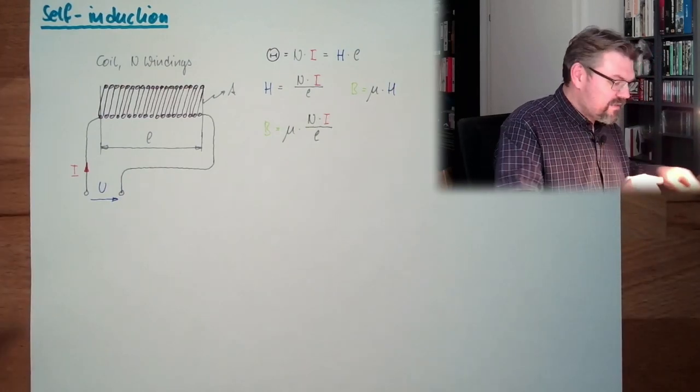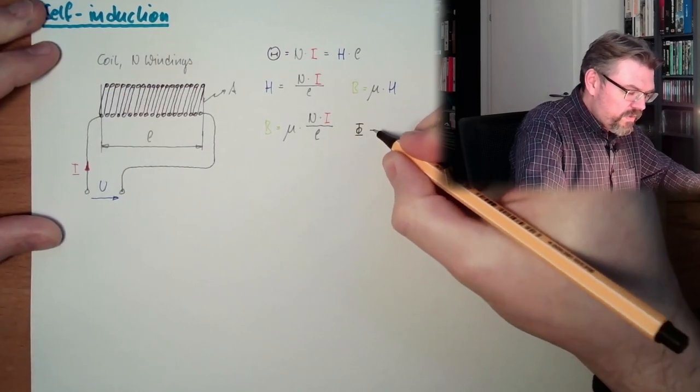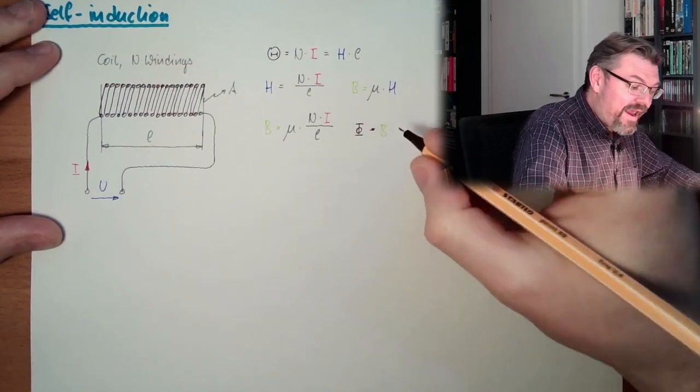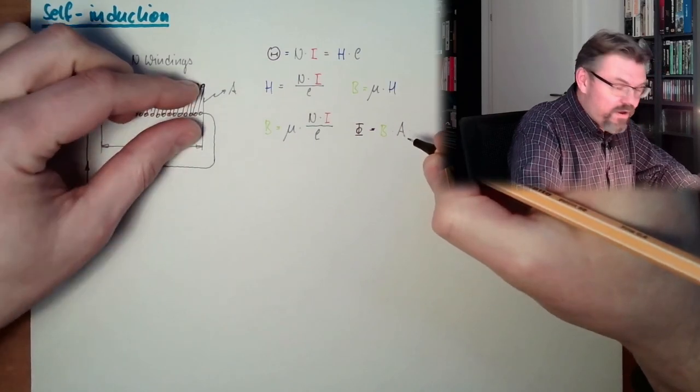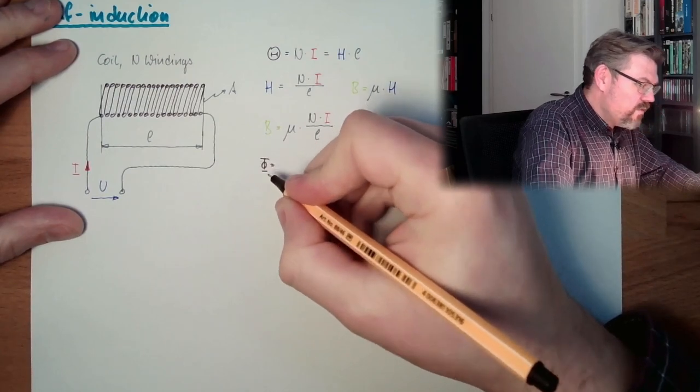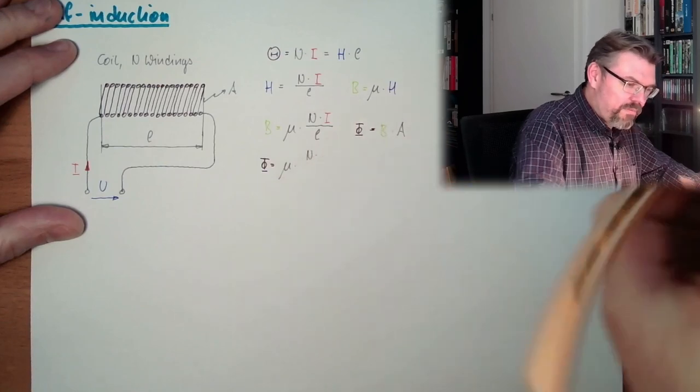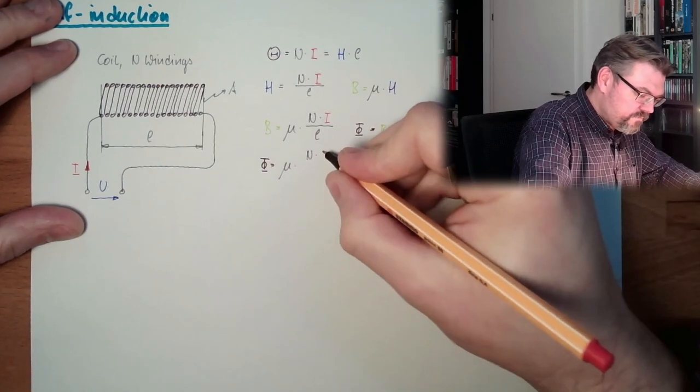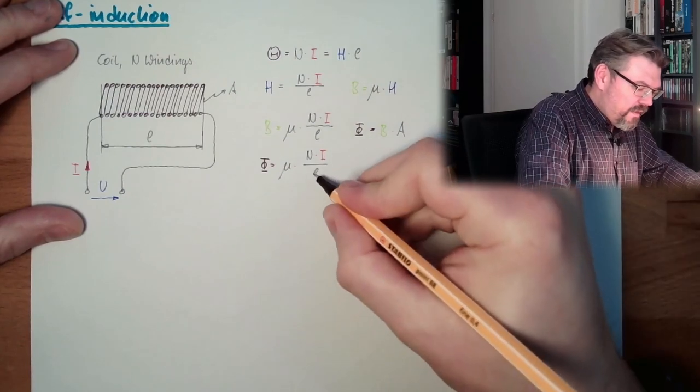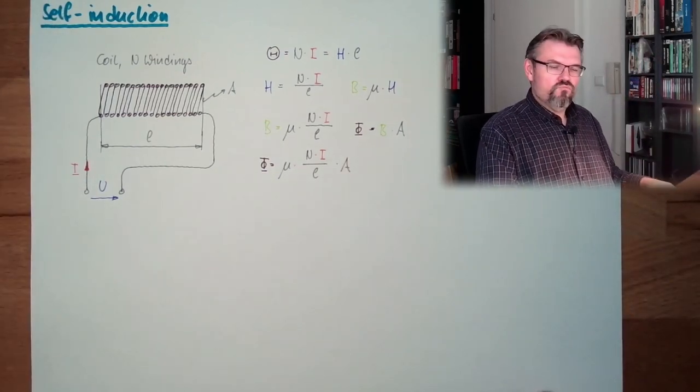So, our magnetic flux density B equals μ multiplied by N multiplied by I divided by L. And our magnetic flux φ, which is going through here, equals flux density multiplied by A, the area. So, our magnetic flux φ equals μ multiplied by N multiplied by I divided by L multiplied by A.